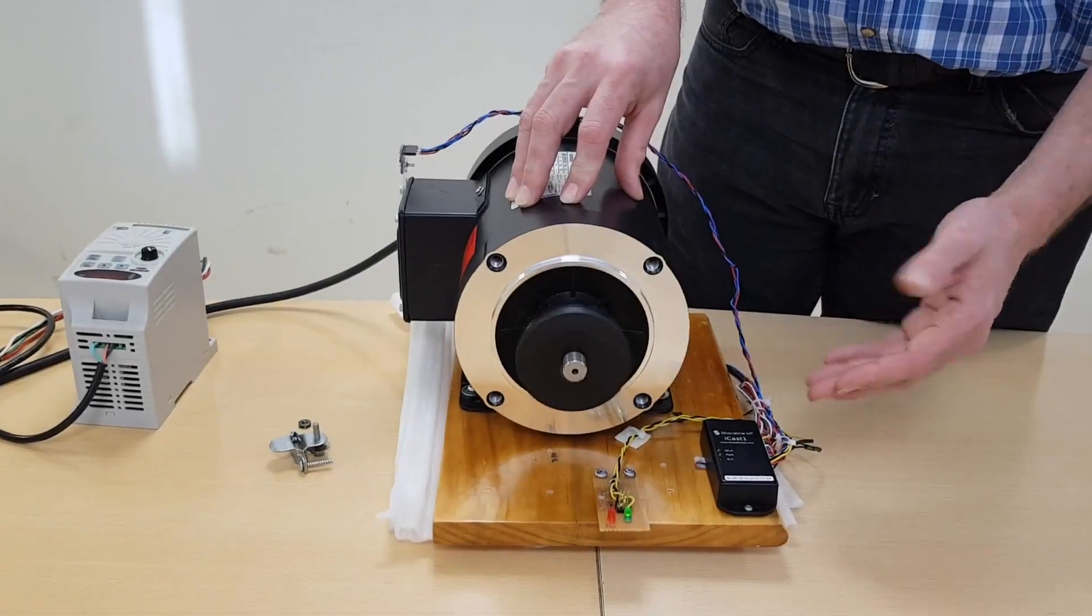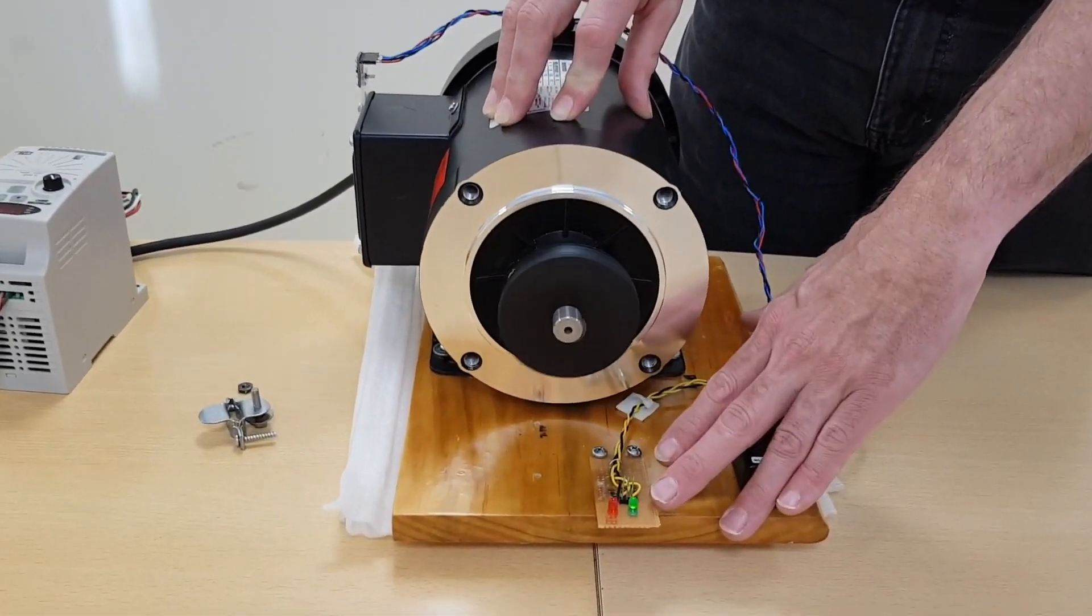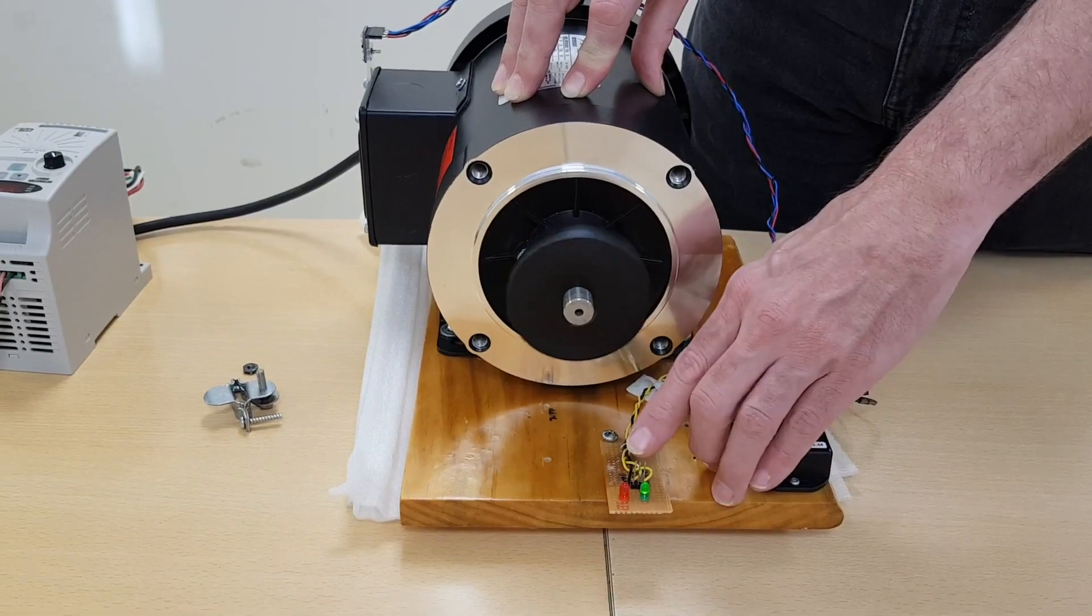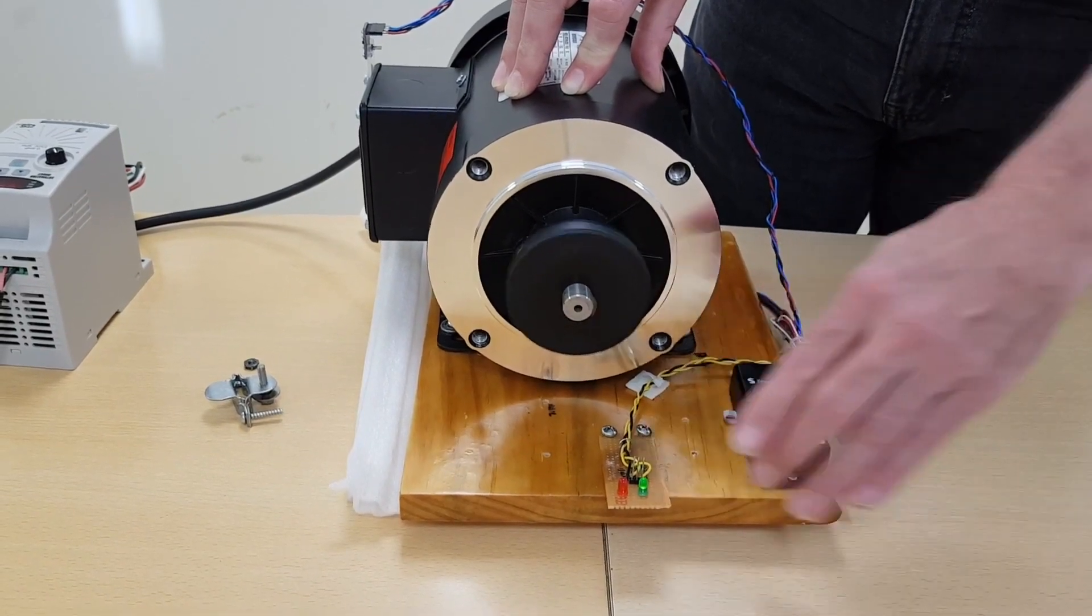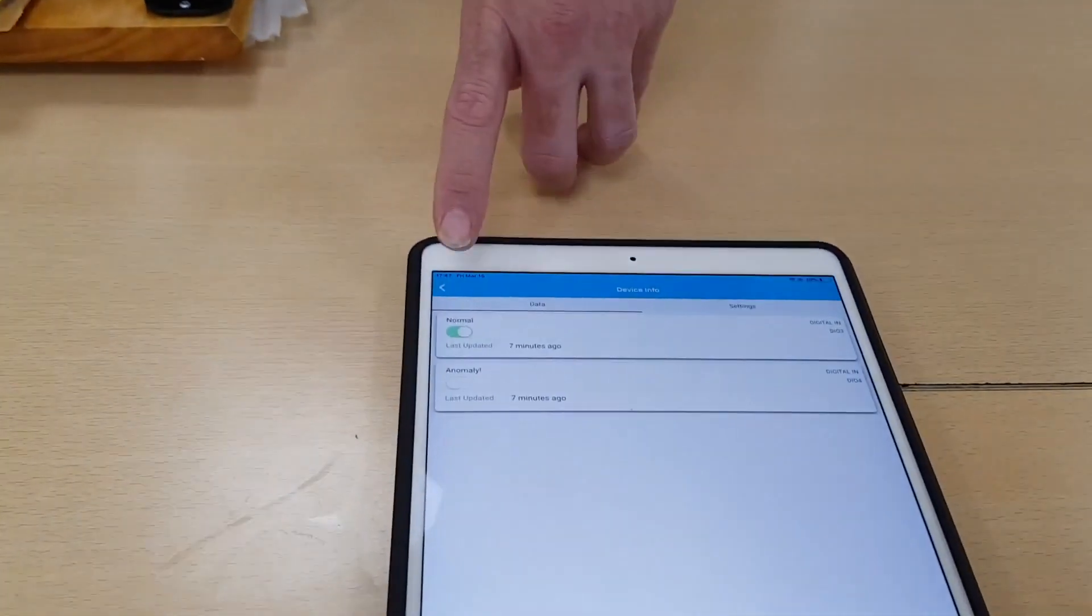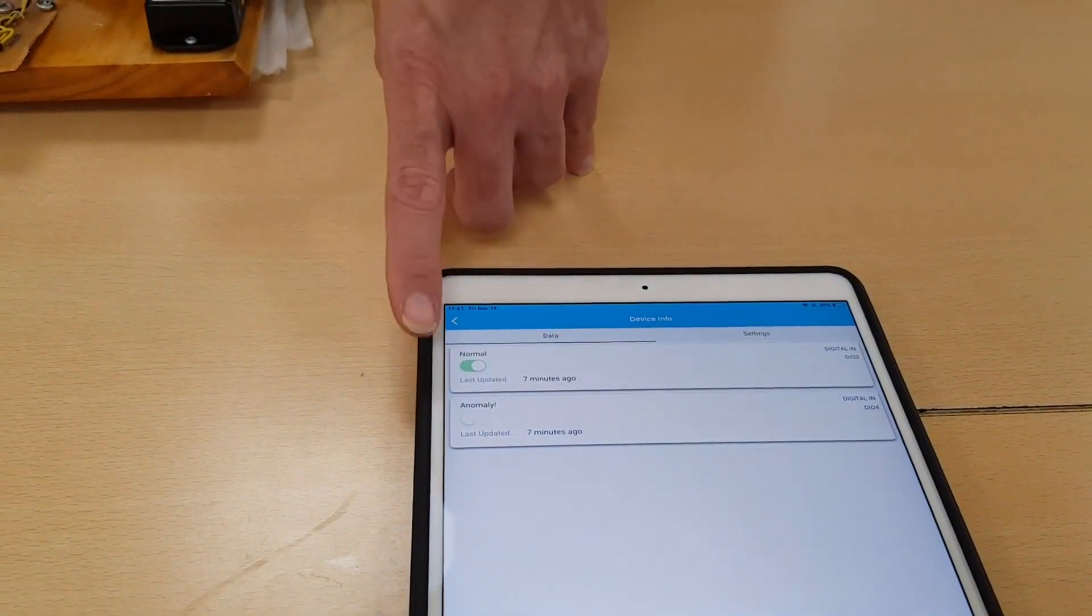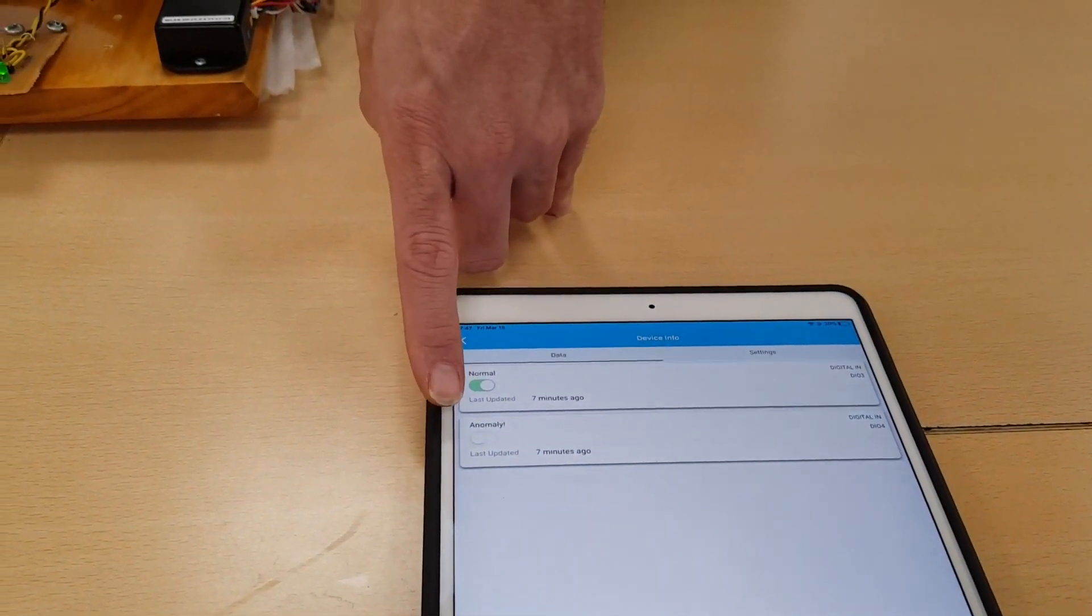With motor operating normally, there's no fault condition. The green LED on indicates that there's no fault. If there were a fault, this red LED would illuminate. Also in the cloud, the dashboard is showing that there's normal operating conditions. This would be set if there was an anomaly.